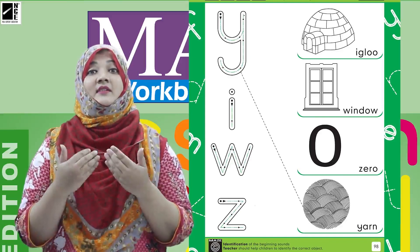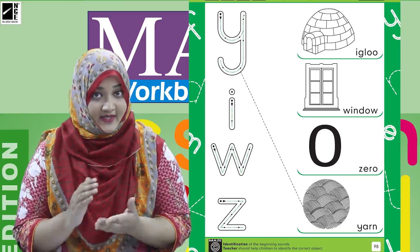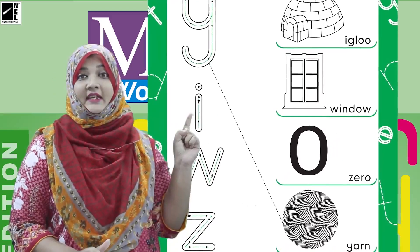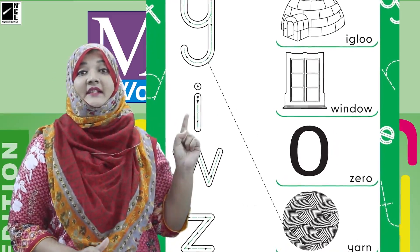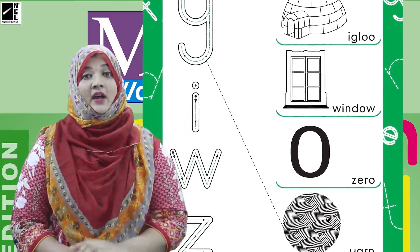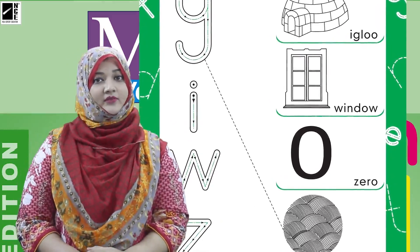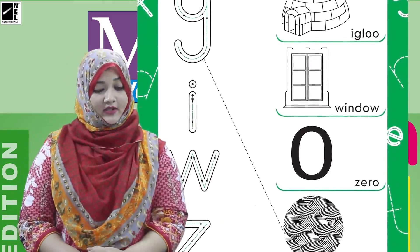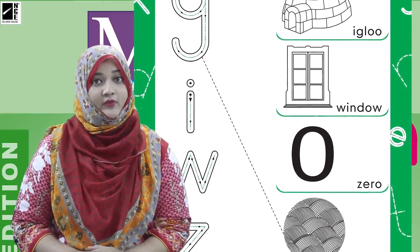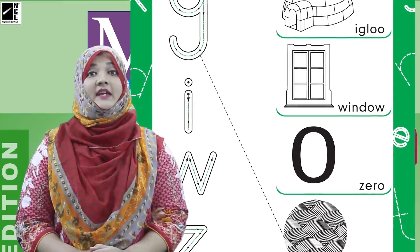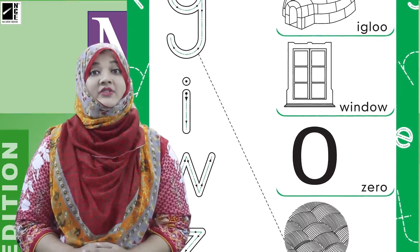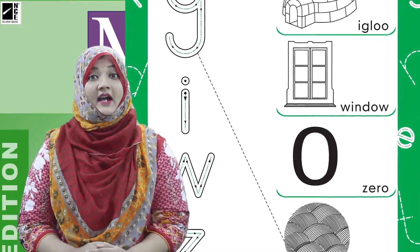Now let's see the next sound. Next sound is E. So what do we need to do? Now let's see the sound and read it. Now let's identify the picture — E sound se shuru hone wali picture kahan hai.